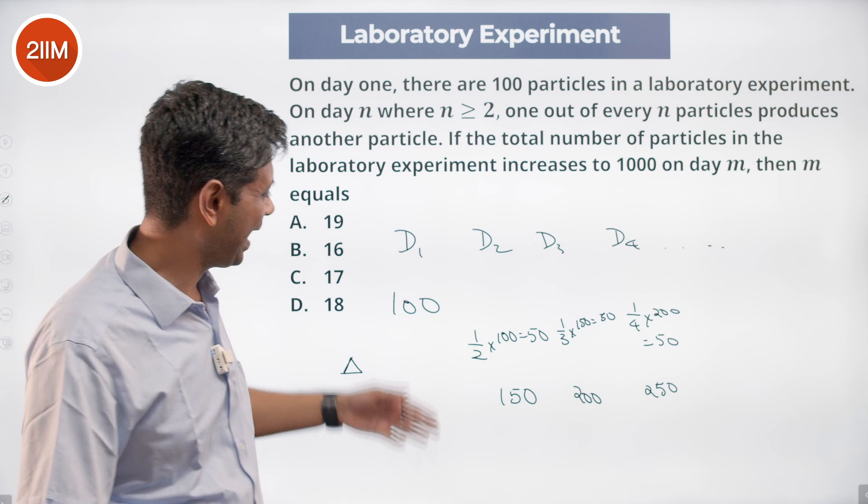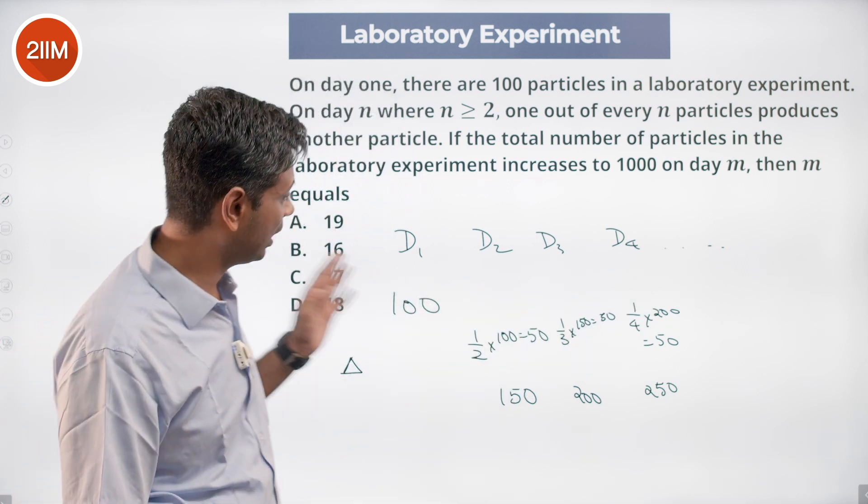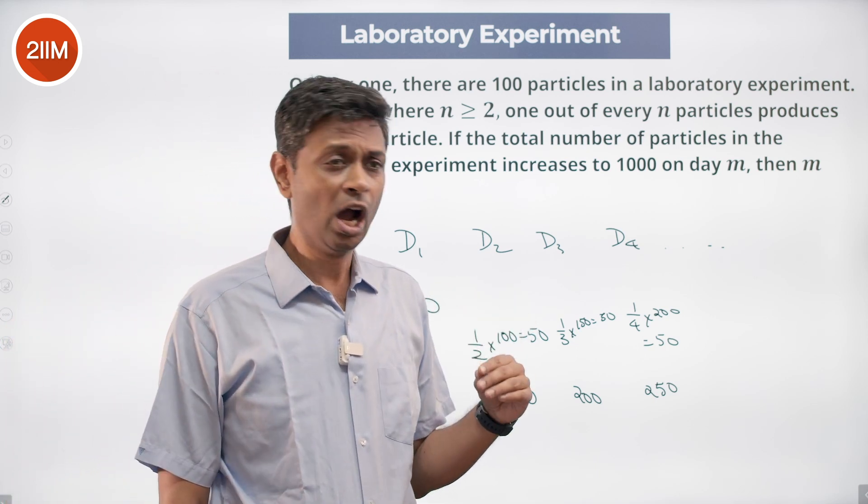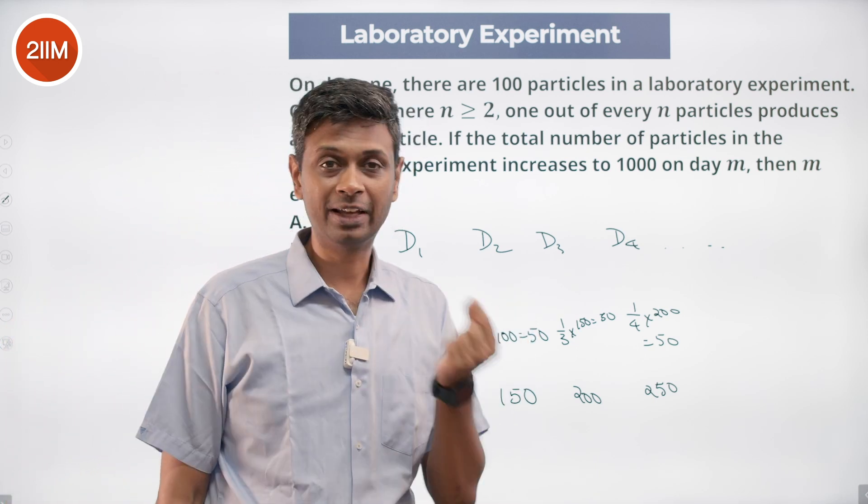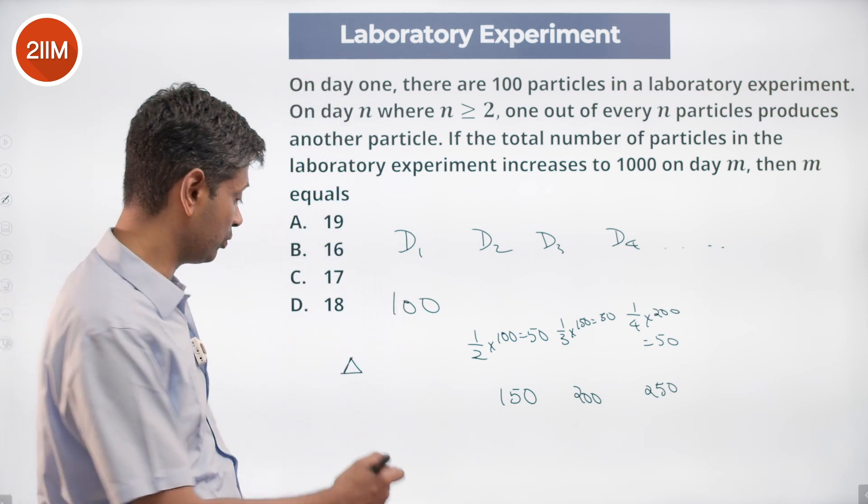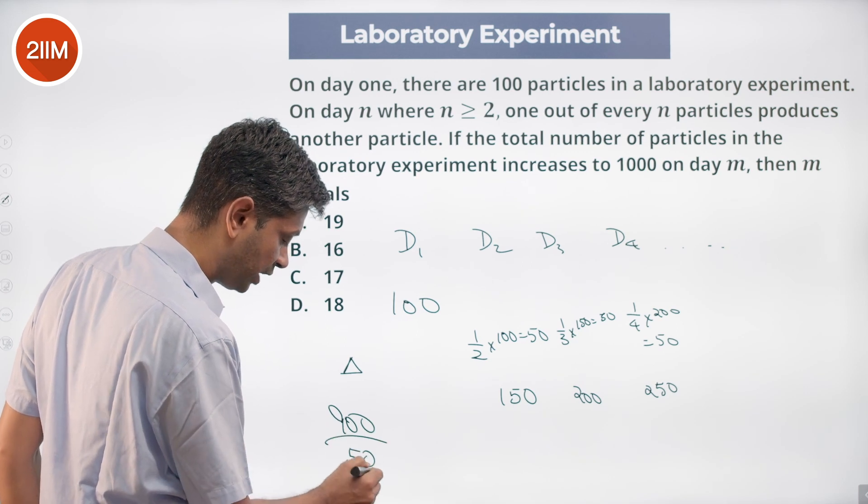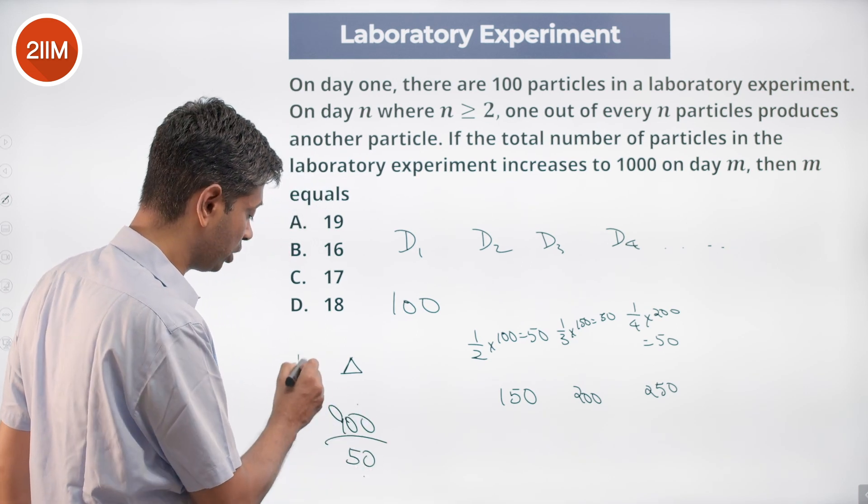We start with 100, and somewhere down the line we're going to hit 1000. We keep adding 50 each day. We have to add 900 total. We add for 18 days. The number of times we add is 900 divided by 50. 50 added each day. 900 is 1000 minus the 100 we started with.